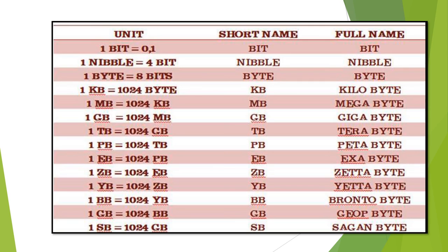One gigabyte equals 1024 megabytes. One terabyte equals 1024 gigabytes. One petabyte equals 1024 terabytes. One exabyte equals 1024 petabytes. One zettabyte equals 1024 exabytes. One yottabyte equals 1024 zettabytes. One brontobyte equals 1024 yottabytes. One geopbyte equals 1024 brontobytes. One saganbyte equals 1024 geopbytes. This saganbyte is the latest unit of memory.